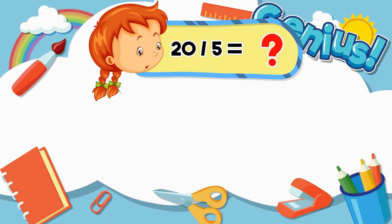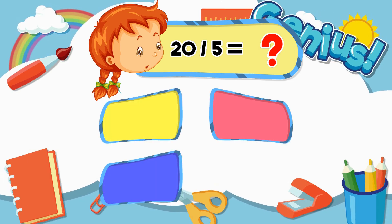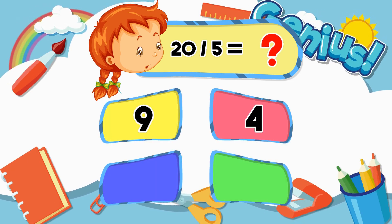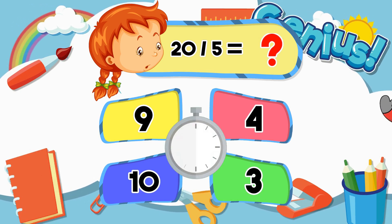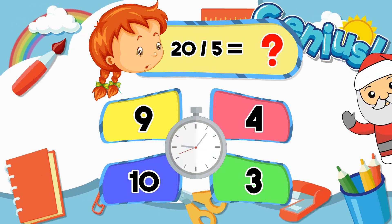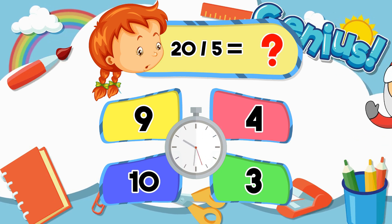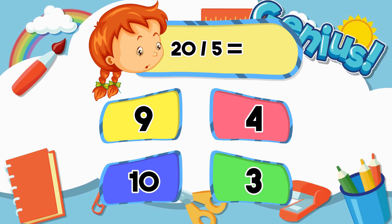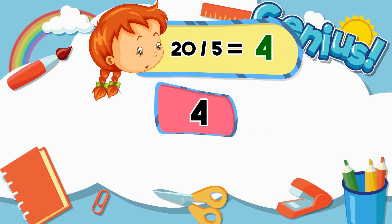What is 20 divided by 5? 9, 4, 10, 3. 4.